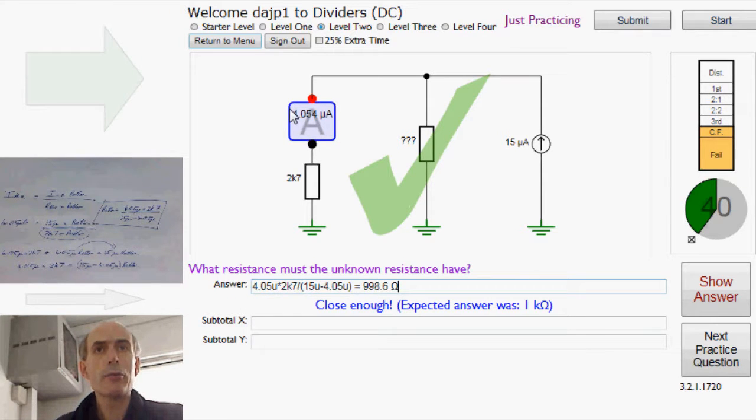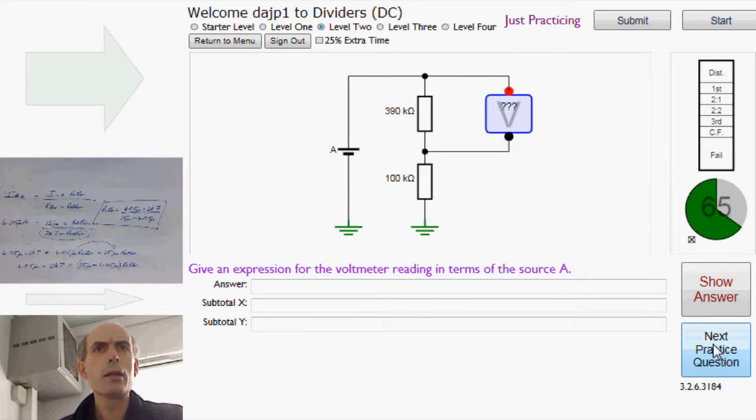Again, slight rounding error because we're only displaying to four decimal places but close enough to be marked correct. It takes a bit of time the first time you do one of these. But after a while, once you've got the formulas sorted out, you can do these quite quickly. Next one.